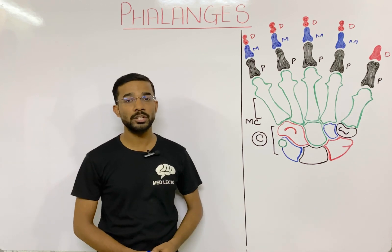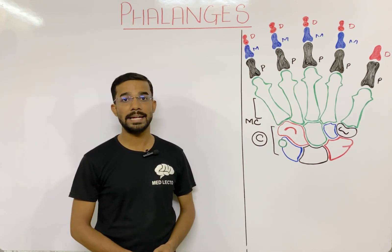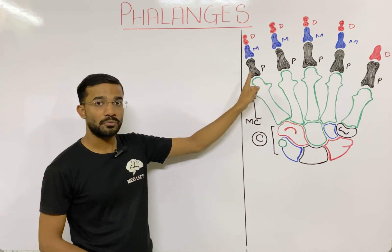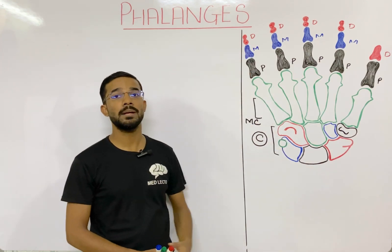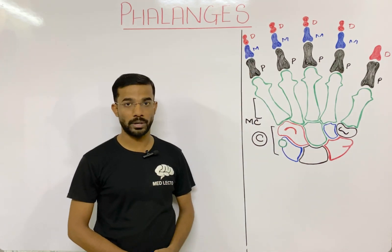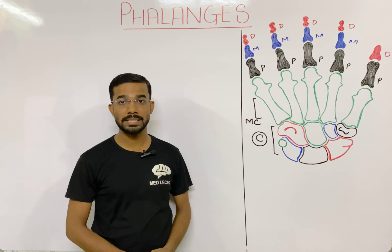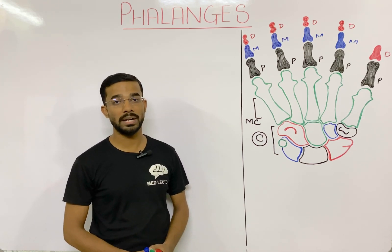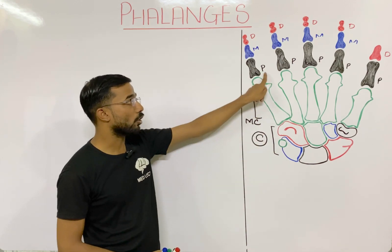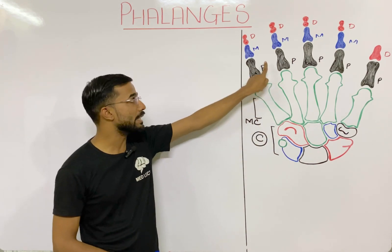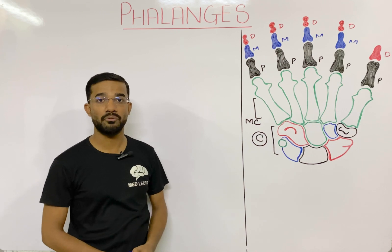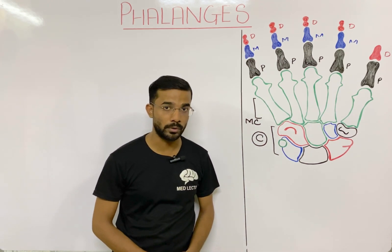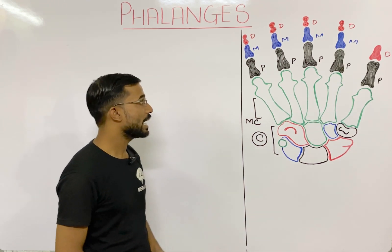Each phalanges has three components: one is the base, then the shaft, and last is the head. These three components are present in the proximal, the middle, and the distal phalanges — all phalanges have three components.